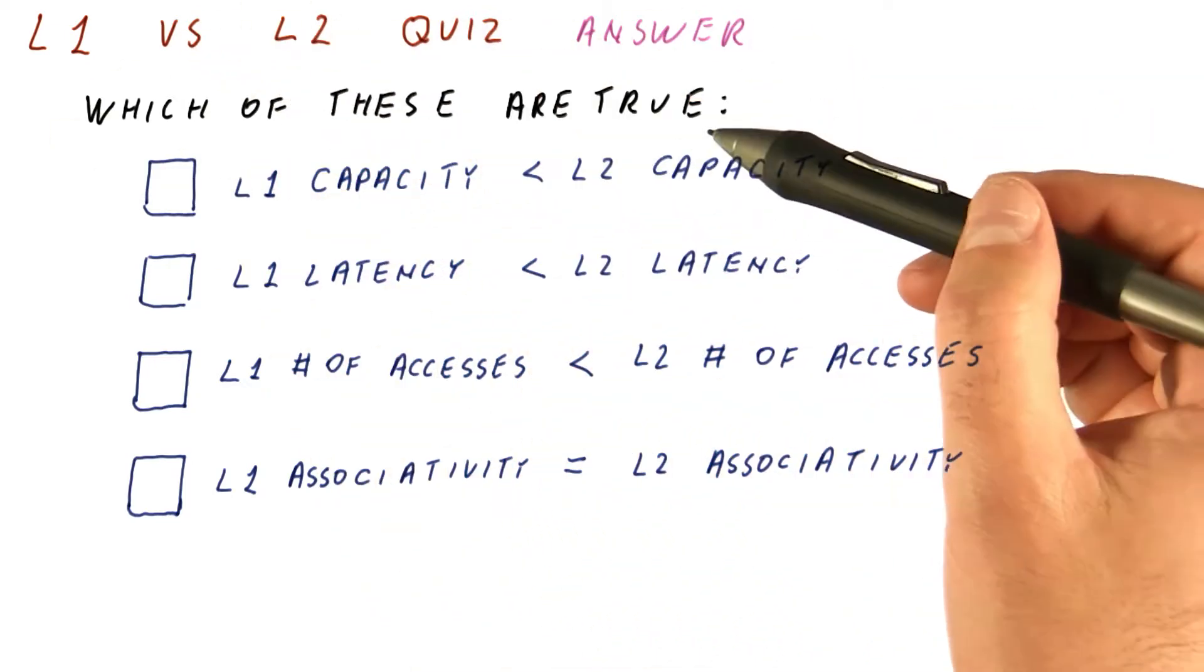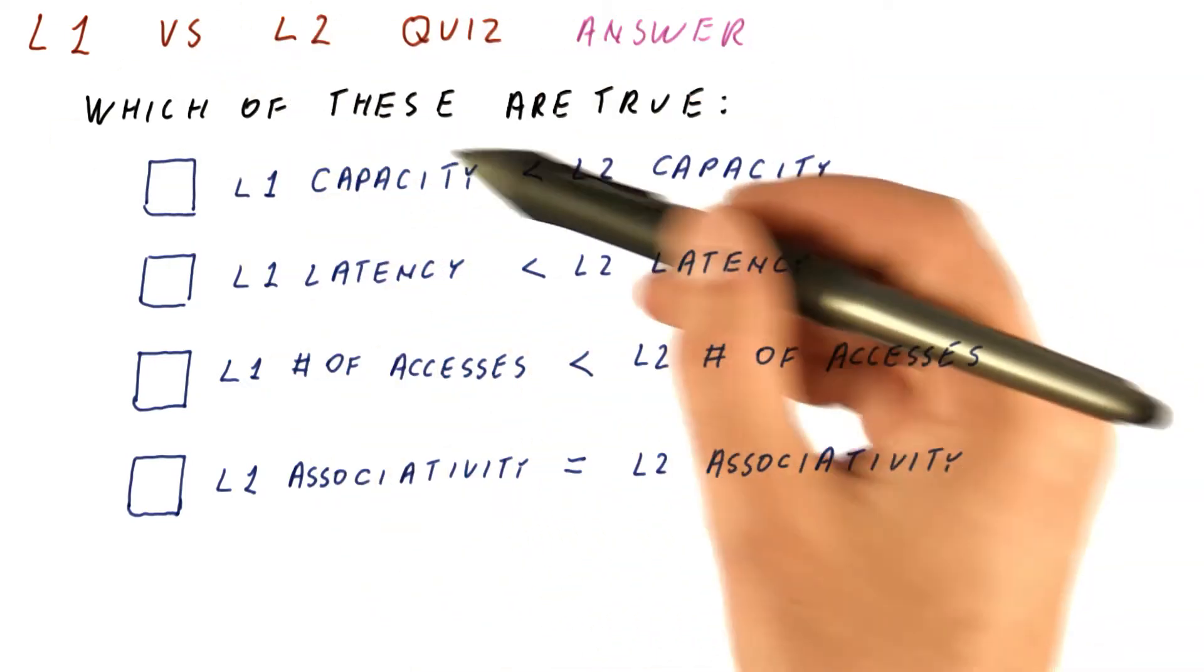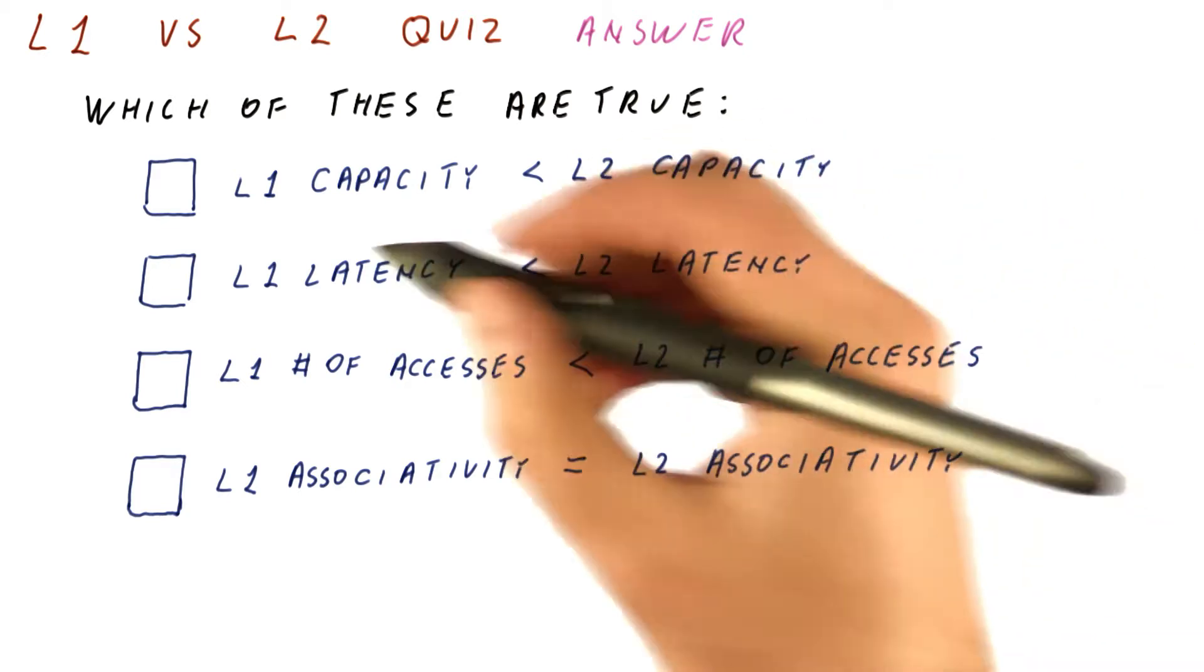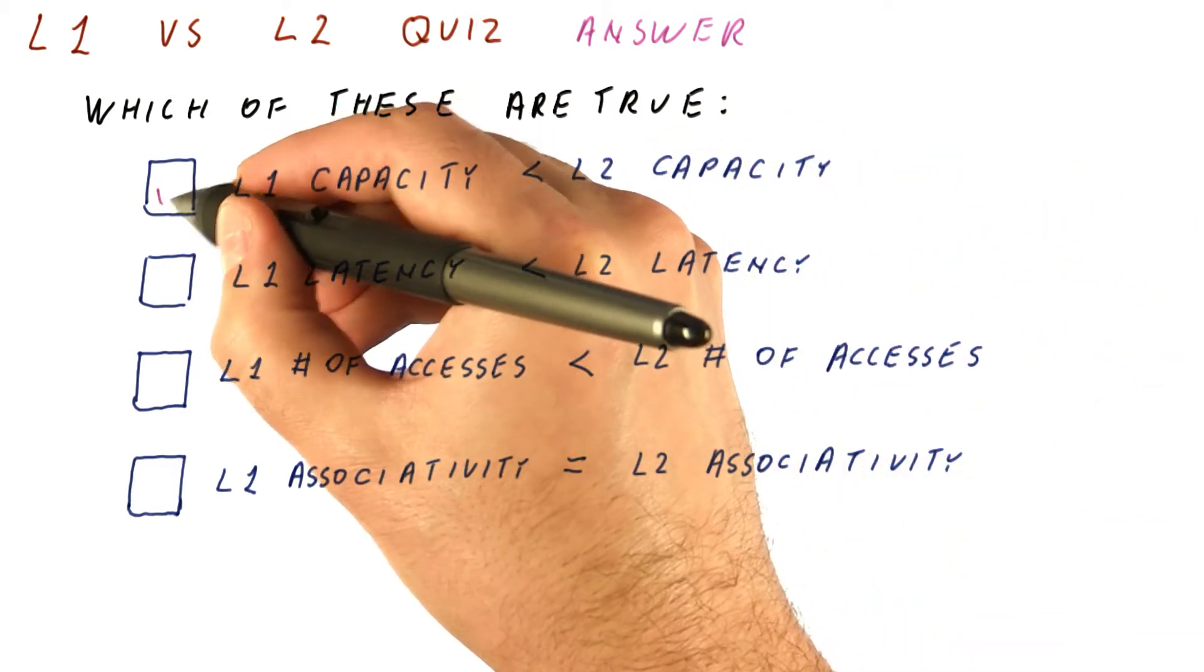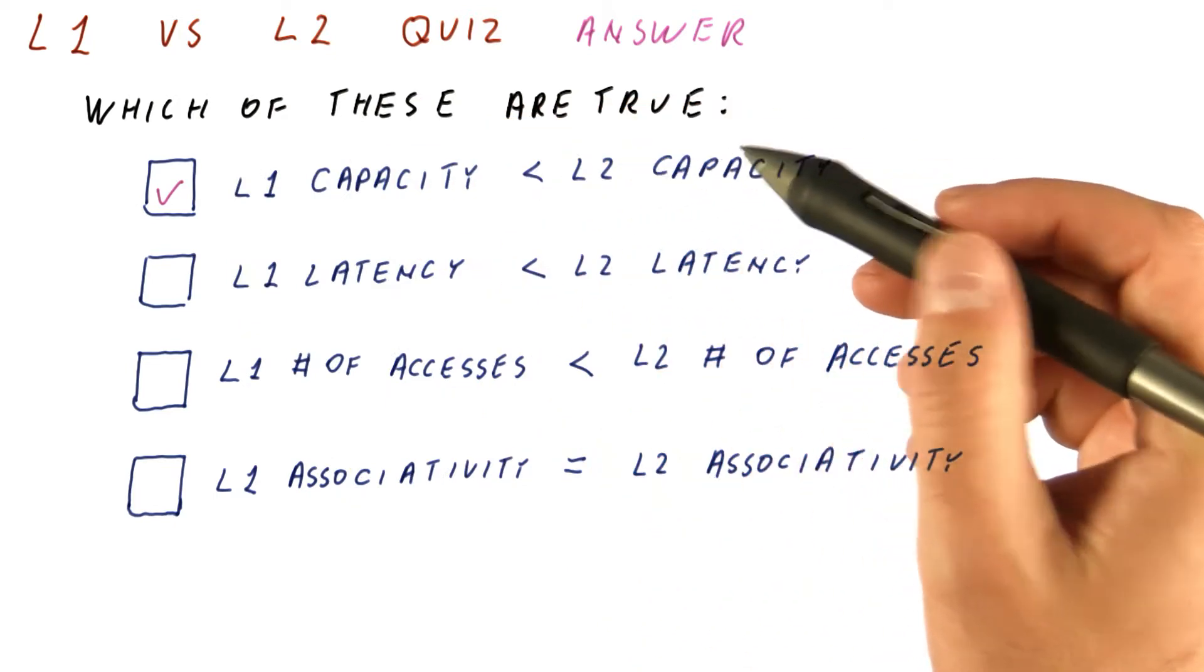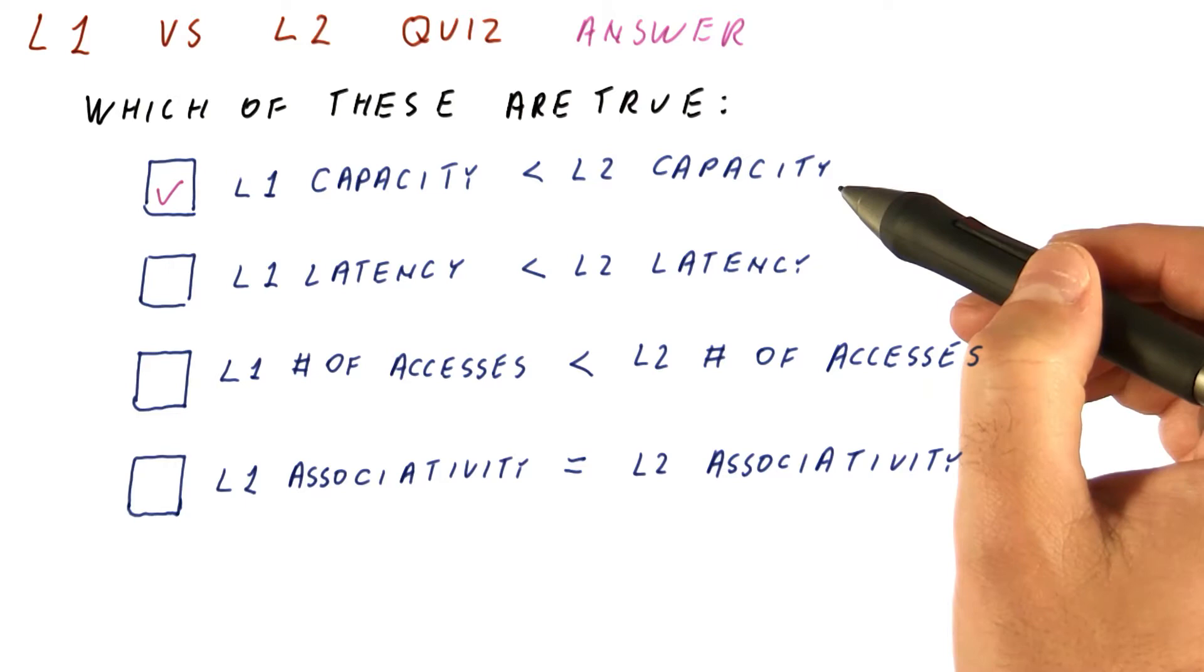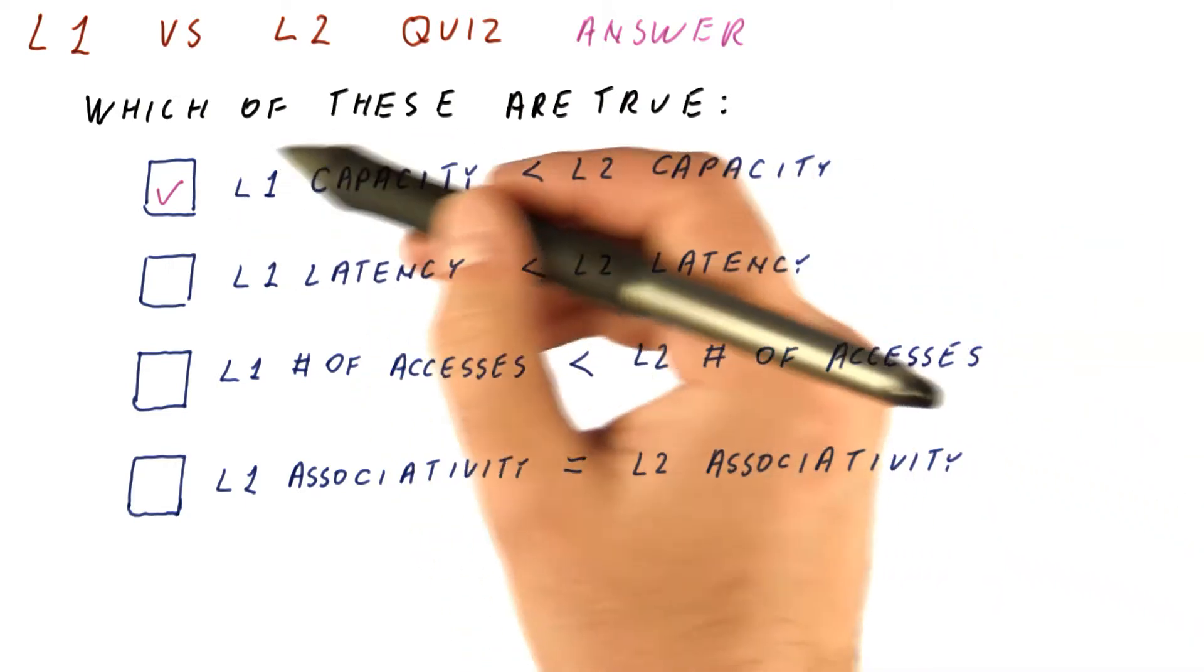Let's look at the answer to our quiz. We were asked which of these are true. L1 capacity is less than L2 capacity. This should be true because the L2 cache needs to have hits for things that were L1 misses.